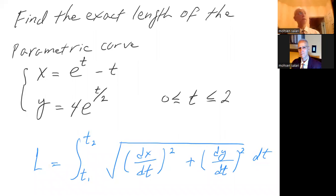Hello Calculus 3. Find the exact length of the parametric curve determined by x equals e to the t minus t, y equals four times e to the t over two, and t is between zero and two.